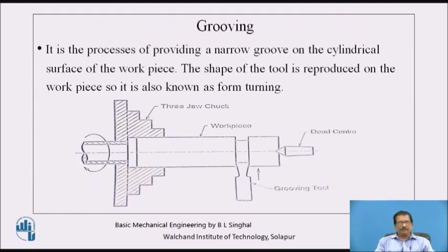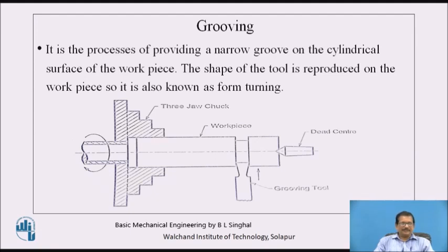First one — grooving. It is the process of providing a narrow groove on the cylindrical surface of the workpiece. The shape of the tool is reproduced on the workpiece, so it is also known as form process or form turning. In this process, the job is held in a chuck mounted on the spindle. The job rotates along the axis of the spindle and is supported from the front side by the dead centre. The tool will travel perpendicular to the axis of the lathe and will generate the surface depending upon the cutting shape of the tool.